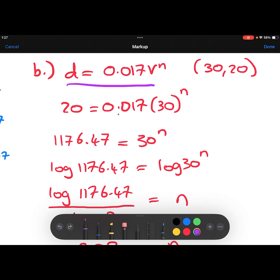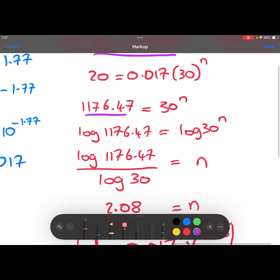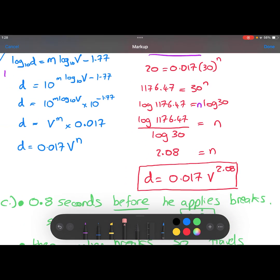I've then divided the 20 by the 0.017, which gives this 1176.47. I've then taken logarithms of both sides. So taking logs here and here gets me to this line. Then I can use the power law to take this n and move it down to the front. And then I've divided both sides by the log 30 to work out what n is. And on my calculator, I've worked out that n is 2.08 to three significant figures.